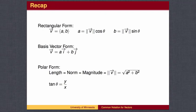To recap, the cosine and sine functions allow us to convert from polar form to rectangular form. The Pythagorean theorem and the inverse tangent function allow us to convert in the other direction. The rectangular form can also be written as the linear combination of I and J, which are vectors of length 1 along the x- and y-axis respectively.